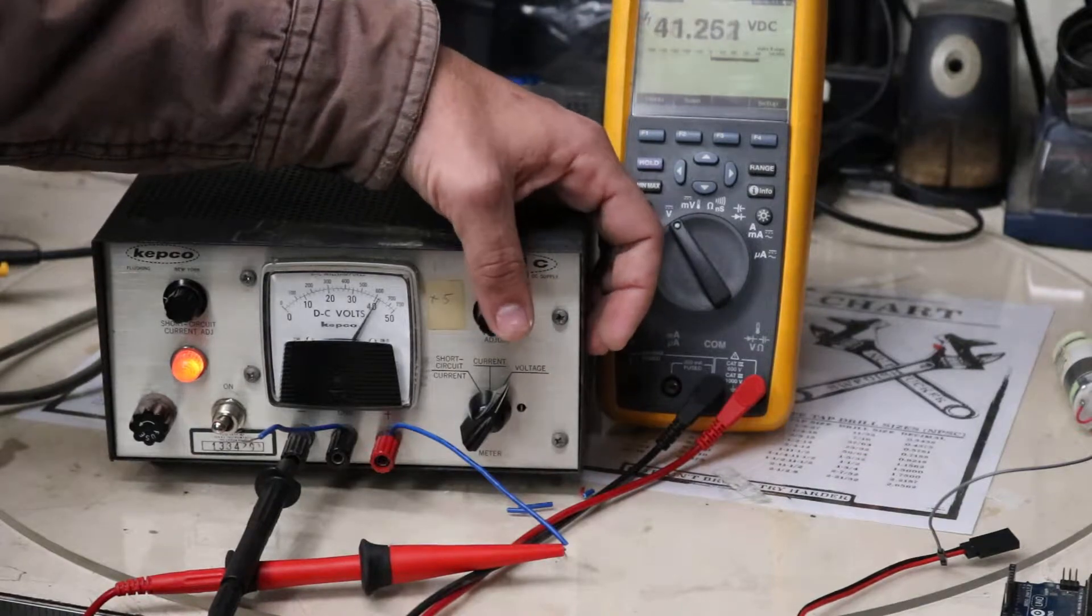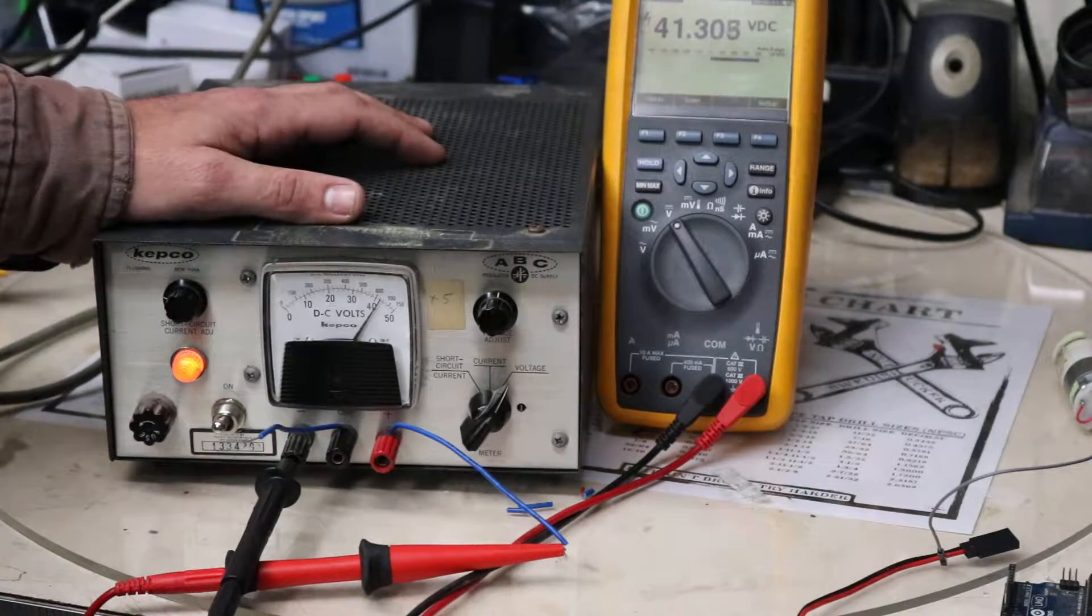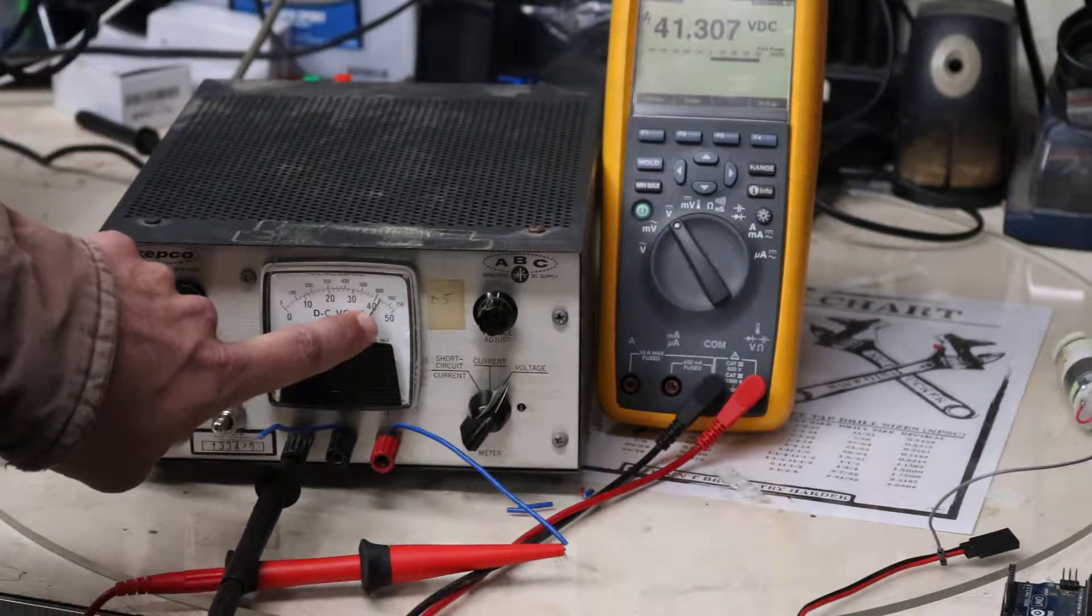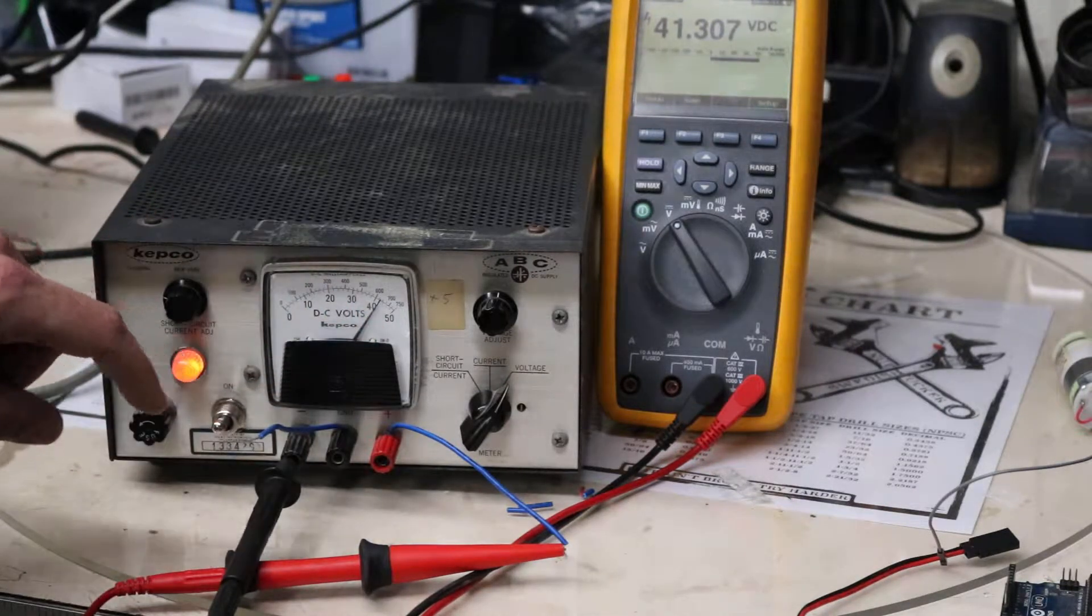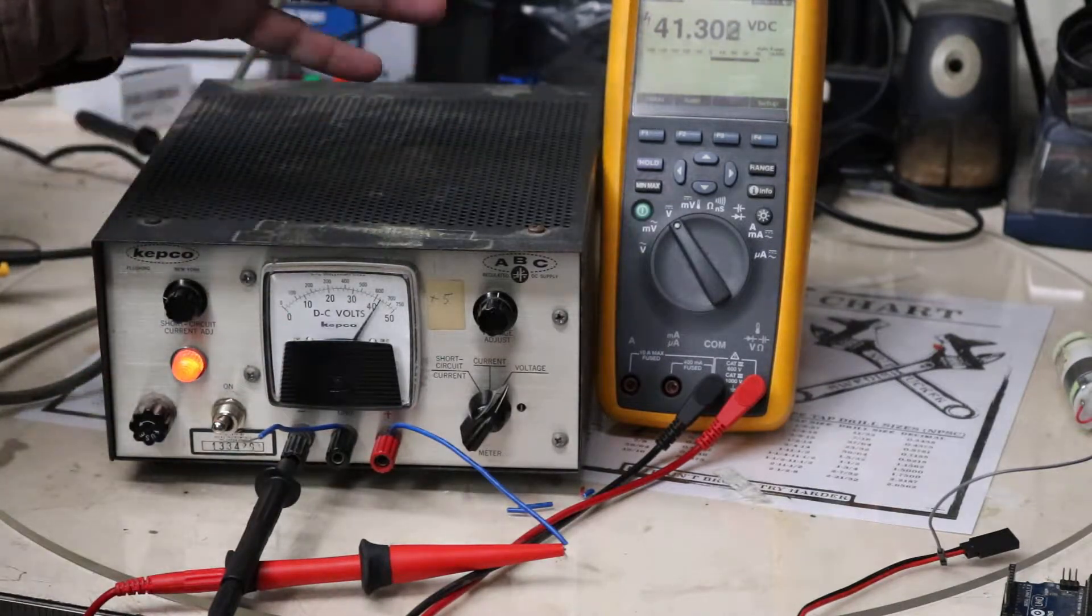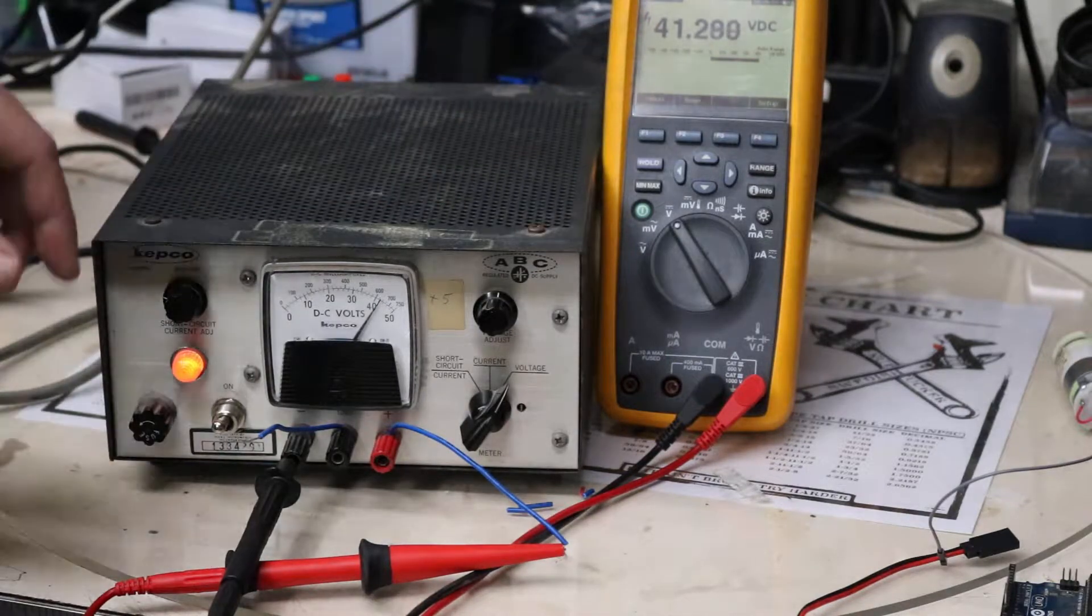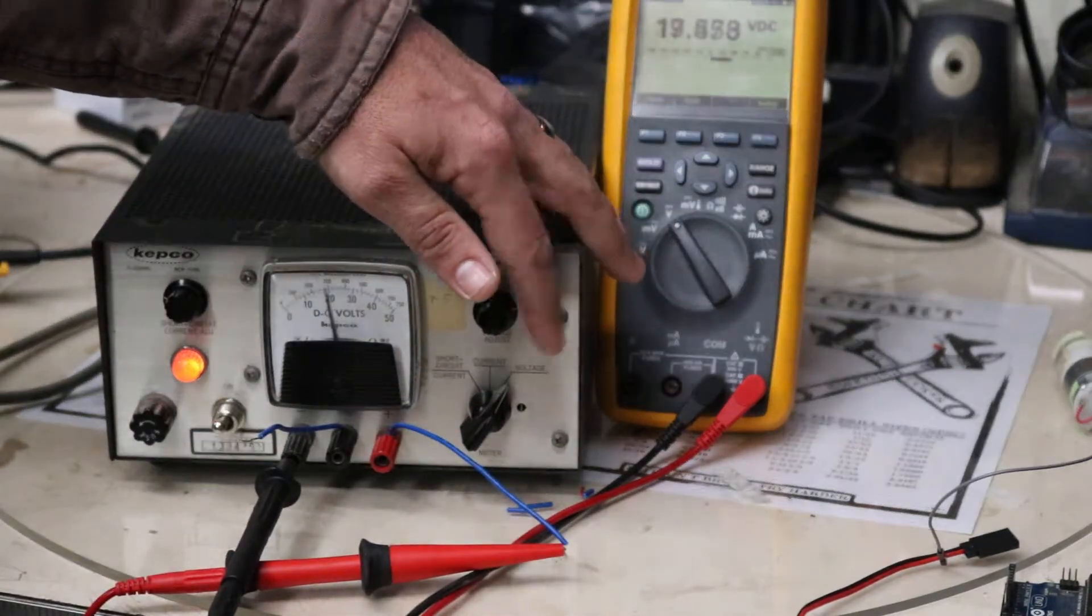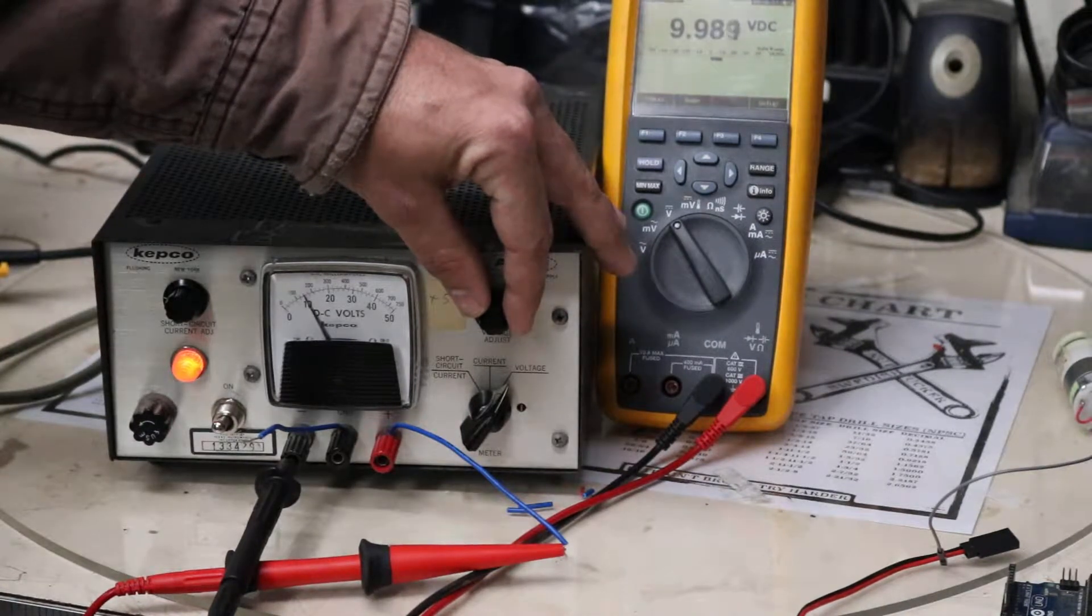See what this thing will go up to. So the potentiometer is maxed out, it's at 41.3 volts. The display is off quite a bit, that looks like it's probably about 50 or 43 or 44 volts. So the display is not entirely accurate, but if you're working on anything that requires that level of precision you're going to be using a more modern multimeter along with it. So let's turn this back down, we'll go back to 10 volts as best we can.